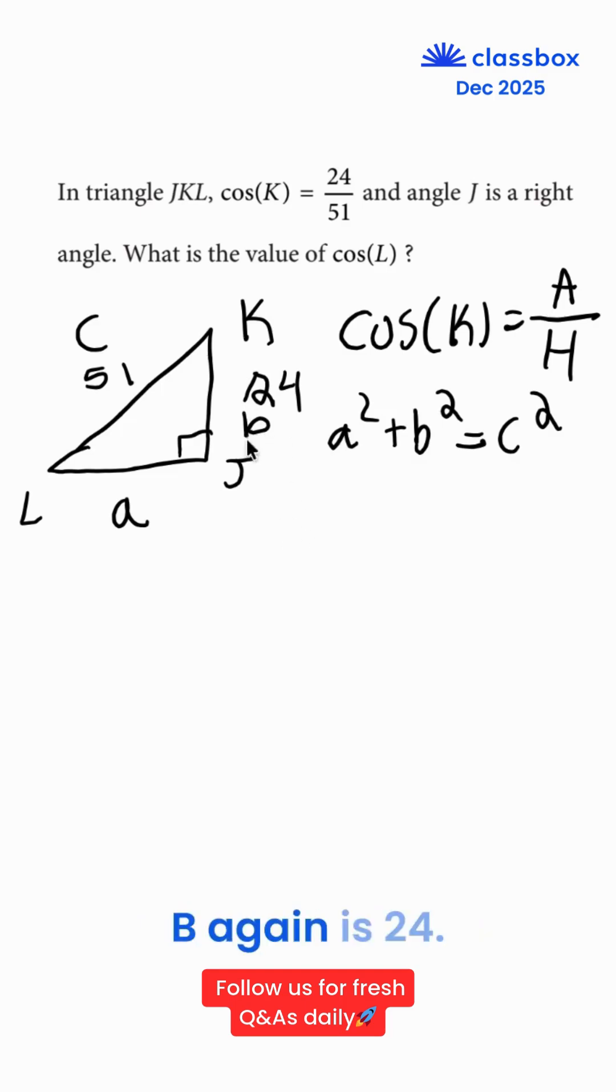Let's say our B is 24. So we'll say A squared is equal to C squared minus B squared. Let's simplify this. A squared is equal to 51 squared minus 24 squared.